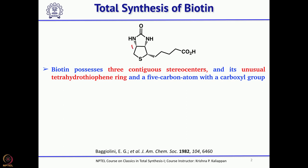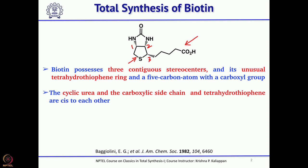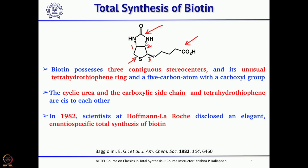These 3 are chirocenters and they are contiguous, and there is one tetrahydrothiophene ring. You can see a completely reduced thiophene ring, and there is a 5-carbon side chain having a carboxylic group at the terminal end. You also have a cyclic urea. The difficult part is the carboxylic acid and these 3 chiral centers — how you are going to introduce these 3 chiral centers stereoselectively so that biotin can be made in its naturally occurring form.